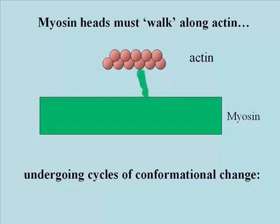If you imagine that every myosin head is doing this to actin — not in a synchronized fashion but asynchronously — you can imagine lots of little myosin heads ultimately grabbing onto actin, drawing it forward a little bit, letting go, and then quickly flipping back and grabbing actin in another position in order to make the actin filament slide towards the center of the myosin thick filament.